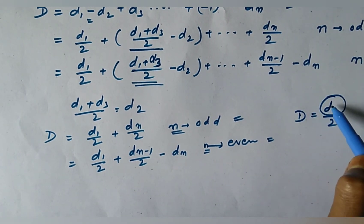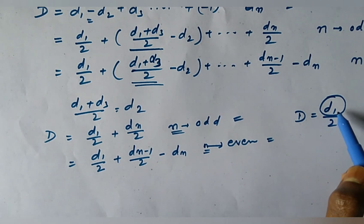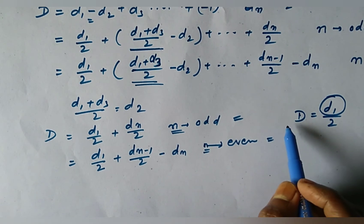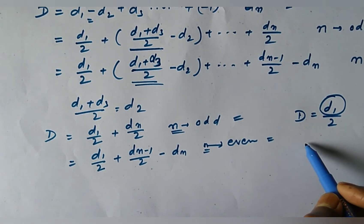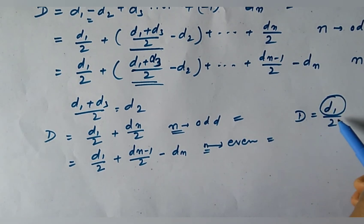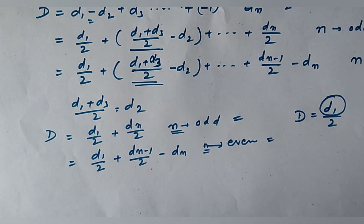As D1 is the amplitude due to the first half-period zone, then we may say that the resultant amplitude at that point P due to the whole wavefront is equal to half of the first half-period zone.